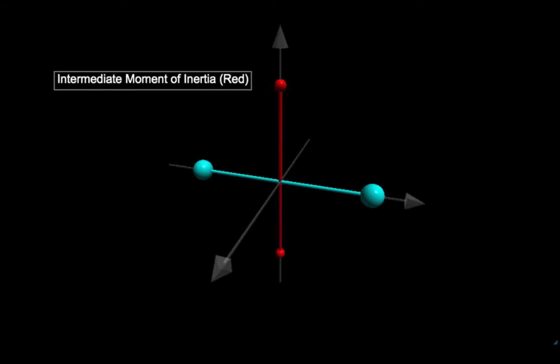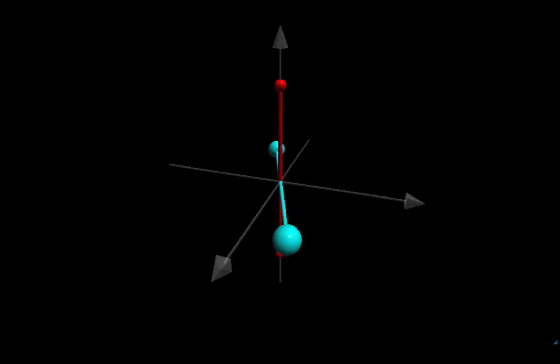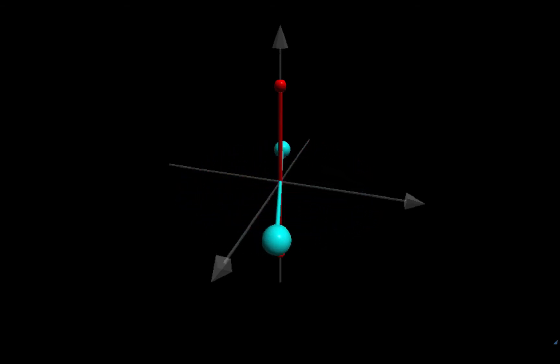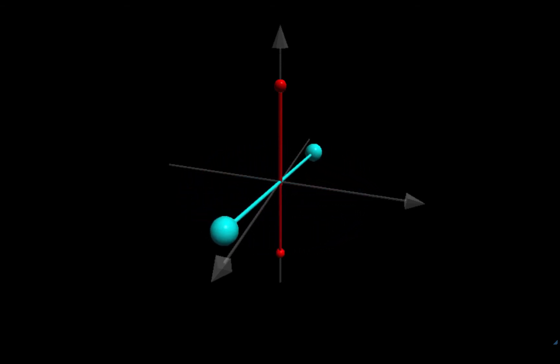Let's return to the simple rigid body consisting of four masses in a plane. The red strut connecting the two small masses coincides with the principal axis that has the intermediate value of moment of inertia — the axis that's unstable according to the intermediate axis theorem. If we begin the rotation precisely along this axis, the body will rotate uniformly forever, as long as it's not perturbed. What you're watching is an actual simulation using the equations of Newtonian mechanics — it's not a cartoon animation.